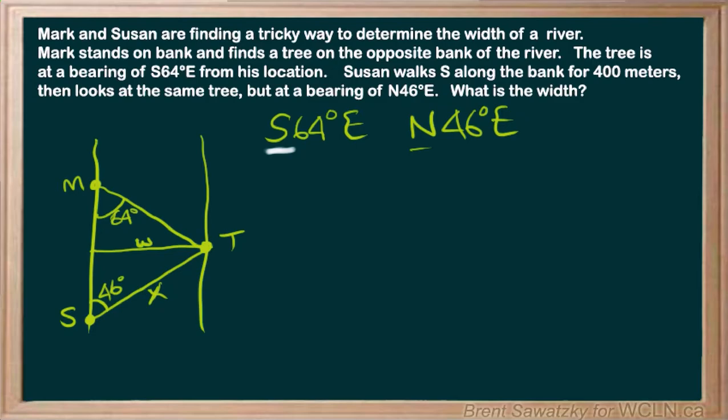Maybe we can use our sine law to figure that one out. So let's take a look. Well, we do know that the distance between Mark and Susan is 400 meters. So that's all the way from there to there. And so that tells us something about the big triangle. And so let's see if we can put together sine ratio. So we know the side 400. Do we know the angle across from that?